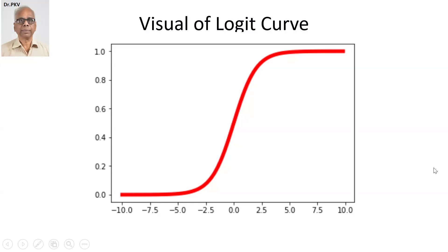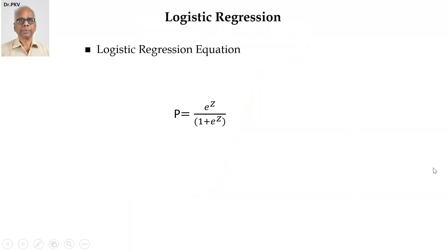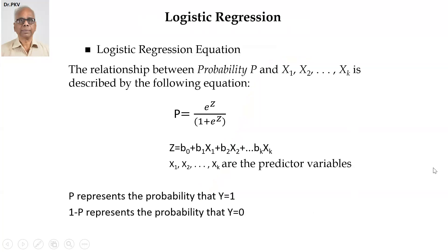Probability P is given by E raised to the power Z divided by 1 plus E raised to the power Z.